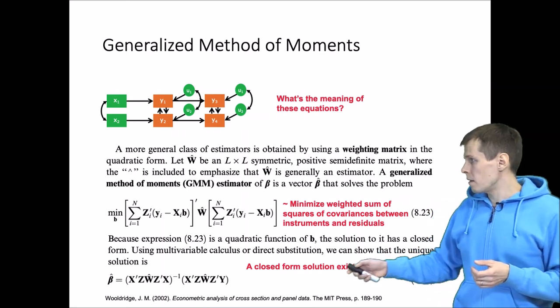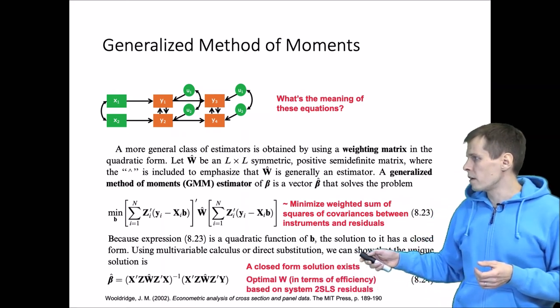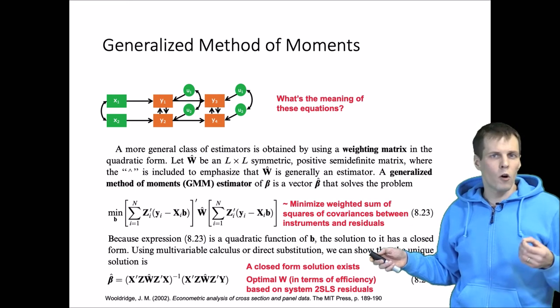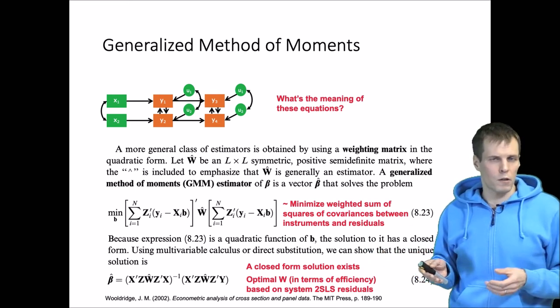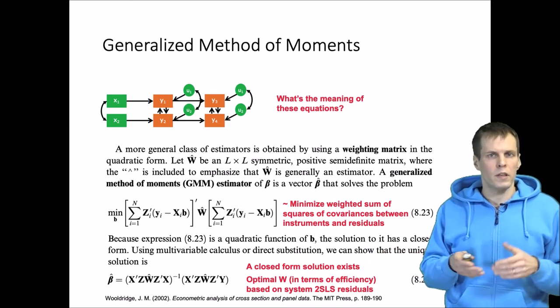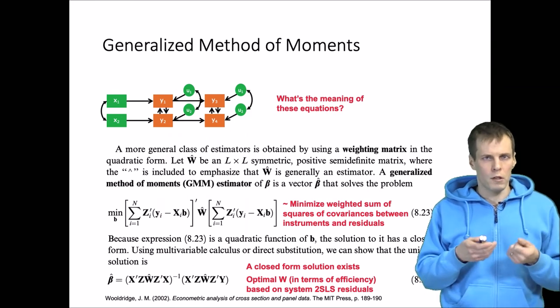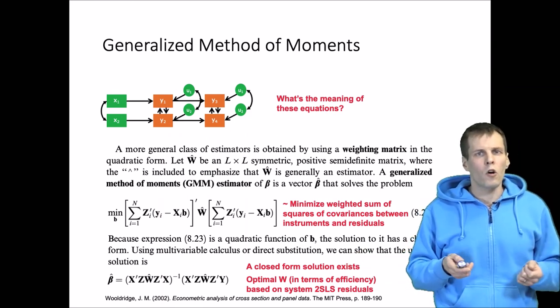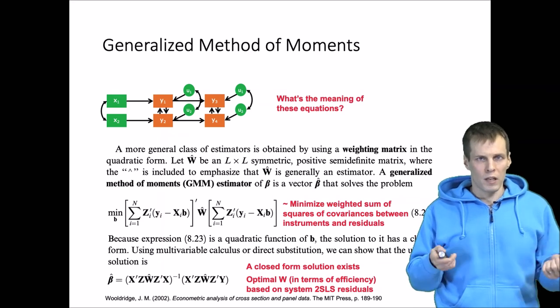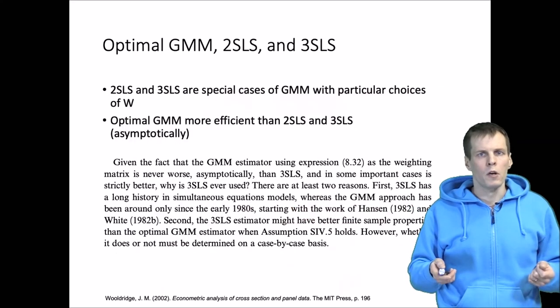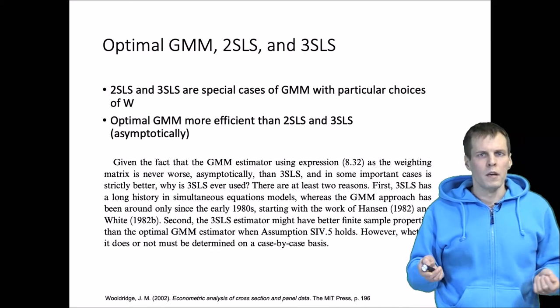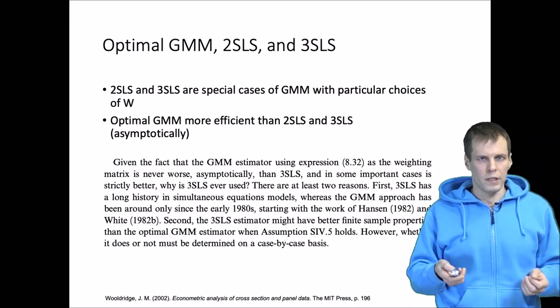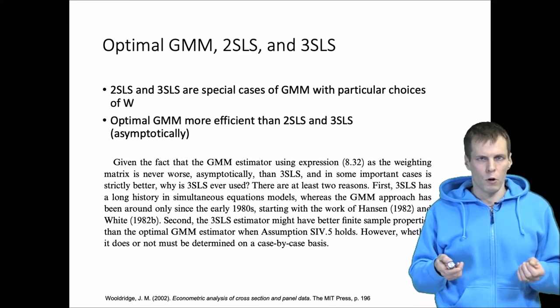The optimal choice of W depends on OLS residuals, two-stage least squares residuals. It has been shown that there is an optimal choice for W, and we call that choice optimal GMM. Most of the time when people use the term GMM, they refer to the optimal version instead of some sub-optimal choice of W.